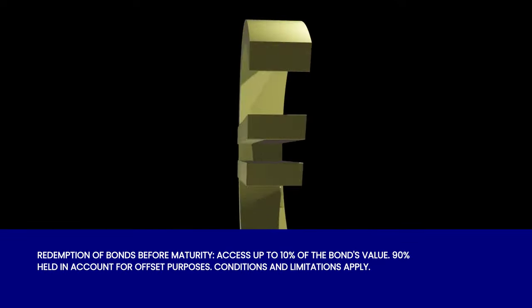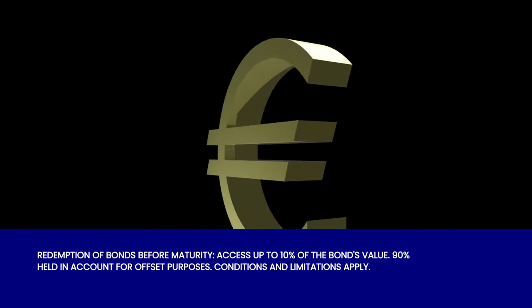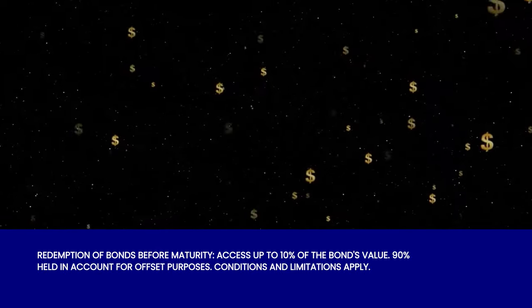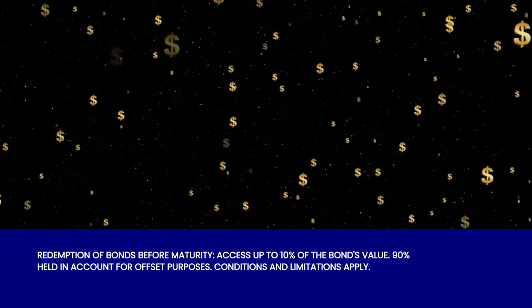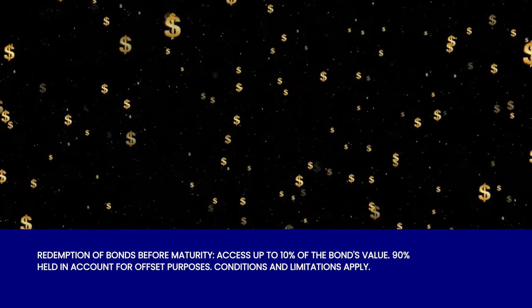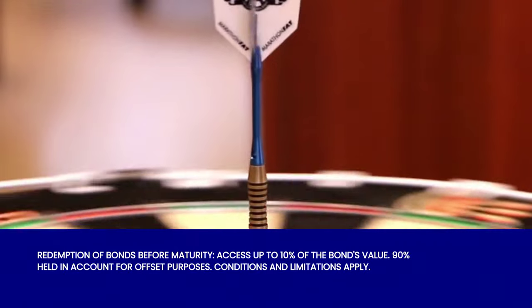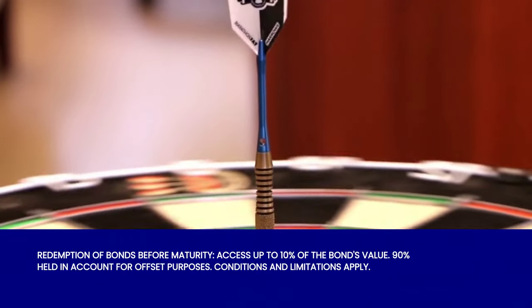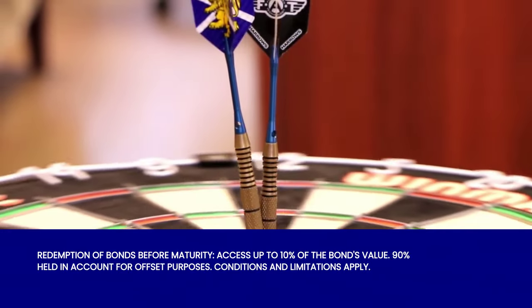Redemption of the bonds is possible prior to the maturity date, but only 10% of the original value of the bond may be accessed. The remaining 90% must remain credited to the account and can only be used for offset purposes. Certain conditions and limitations apply to the redemption process.